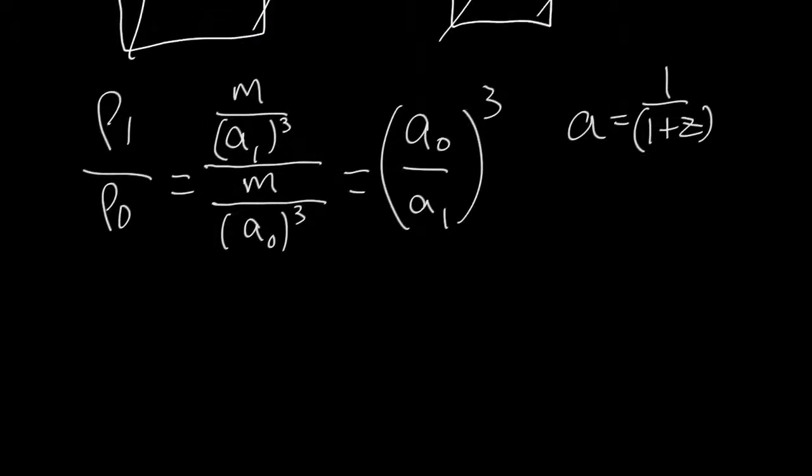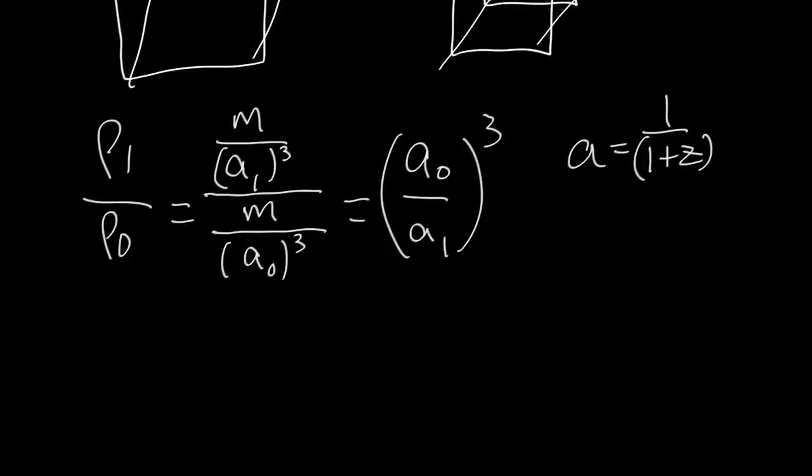Then we can rewrite this. And we can see that if I make a substitution for 1 over 1 plus z, that this whole thing becomes 1 plus z1 over 1 plus z0 cubed.